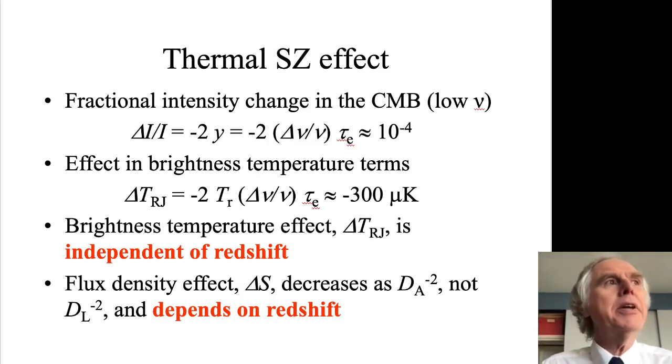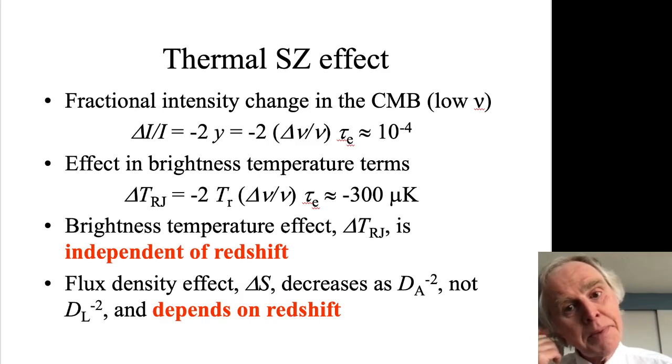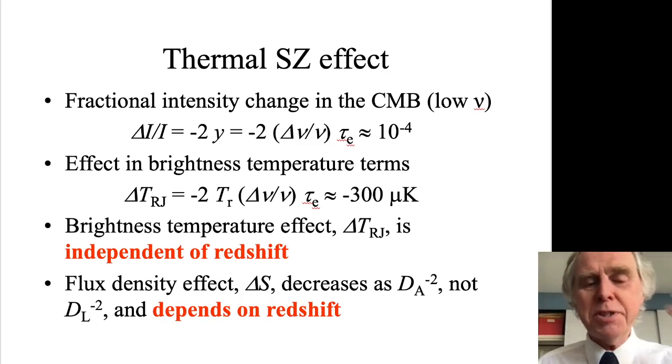At low frequencies, that gives an intensity change in the microwave background radiation that's just -2y. I can write that either in brightness temperature terms or in flux density terms. In brightness temperature terms it's simpler. The brightness temperature of the center of a cluster will change by the brightness of what you're shining on it, and in temperature terms that's the temperature of the microwave background radiation, 2.7 kelvin multiplied by this scattering factor and the factor of 2, and that's of order 300 microkelvin.